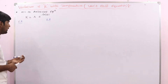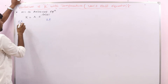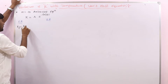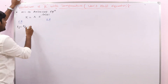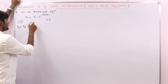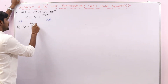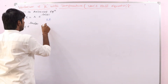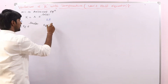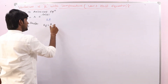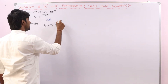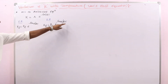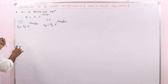Taking this equation, for the forward reaction the rate constant equals Af, the frequency factor for the forward reaction, into exponential of minus Ea(forward) by RT — the activation energy of the forward reaction by RT. For the backward reaction, the rate constant equals Ab, the frequency factor of the backward reaction, into exponential of minus Ea(backward) by RT.